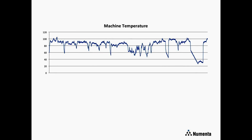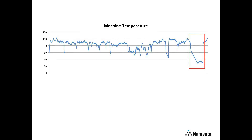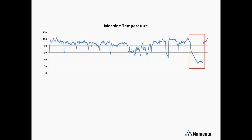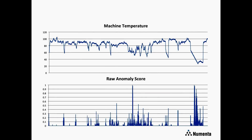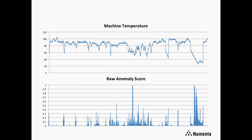Here is a sensor reading from a large piece of machinery — a windmill recording temperature. There's a period at the end where the machine actually fails, and it'd be nice to detect that as anomalous. But it'd be really nice to detect an unusual temporal pattern earlier in the data that might allow us to do predictive maintenance on the machine. We fed this data through the HTM learning algorithms and computed a raw anomaly score at each point. We did detect an anomaly when the machine failed, but the HTM algorithms were also able to detect an unusual temporal period earlier on.